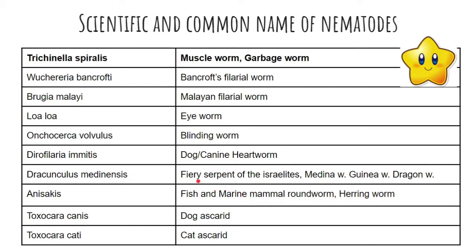For today, we will be discussing Trichinella spiralis, otherwise known as the muscle worm or the garbage worm. The scientific name is Trichinella spiralis, and we will discuss later why it has these common names.